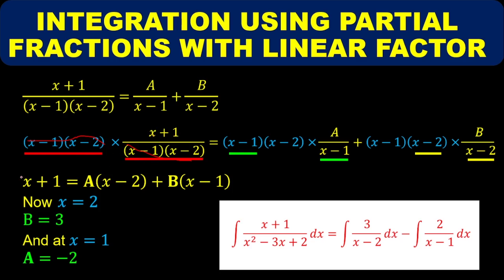So we are left with x+1 on the left side. Then when we multiply the LCM (x-1)(x-2) by A/(x-1), the (x-1) terms cancel, leaving A·(x-2). Similarly, multiplying the LCM by B/(x-2) cancels the (x-2) terms, leaving B·(x-1). So the equation becomes: x+1 = A(x-2) + B(x-1).